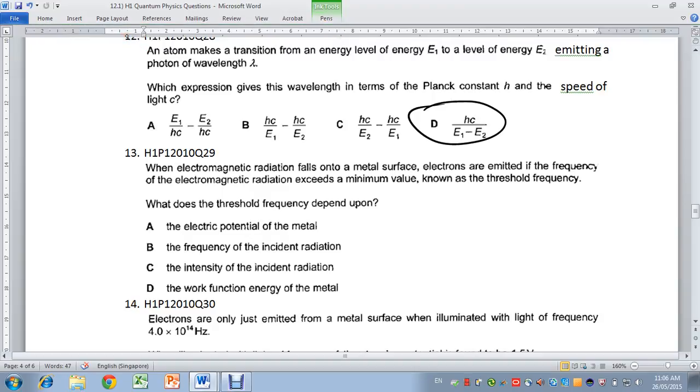Look again. This is the equation: hf equals the work function plus eVs. When your eVs is zero, that means you don't need any energy to stop the electron, or rather, the electron comes out with no velocity. You get hf0 equals phi. This suggests that the threshold frequency depends on the work function. And we know that the work function depends only on the metal. Hence, the answer is D, the work function of the metal. Thank you.